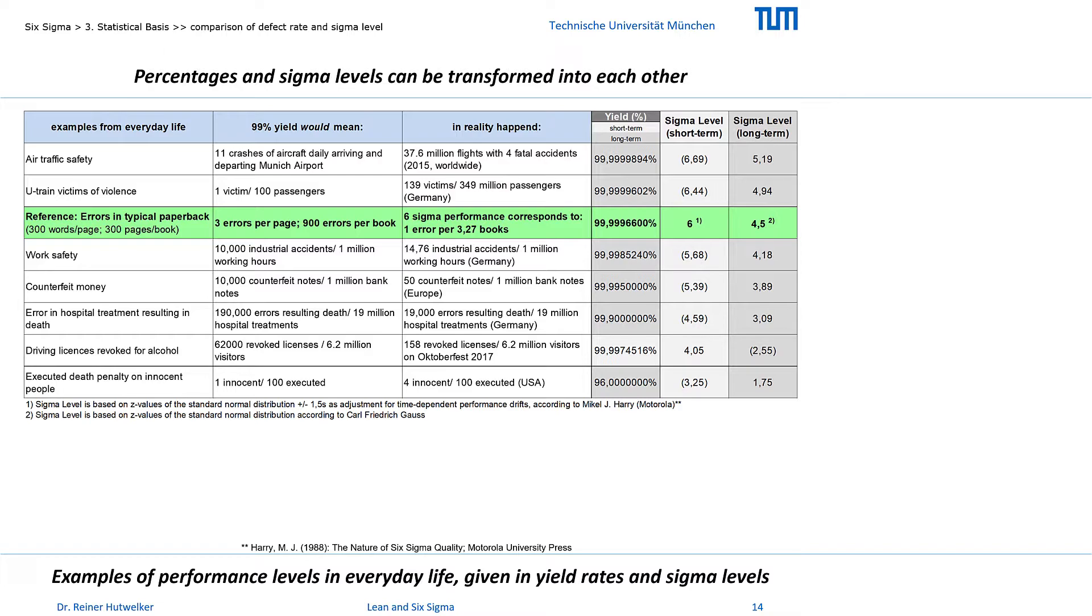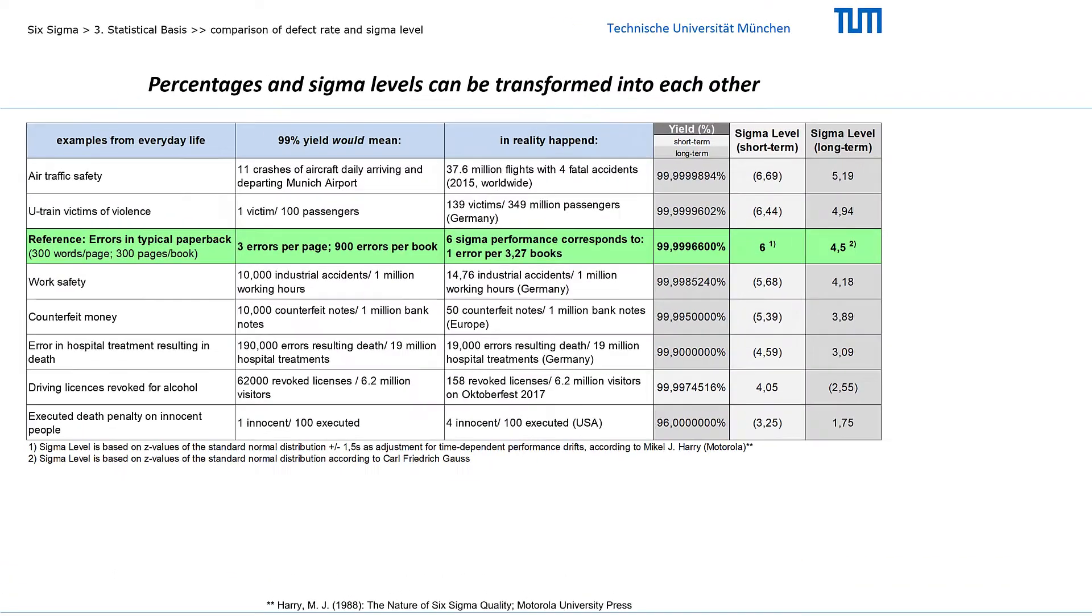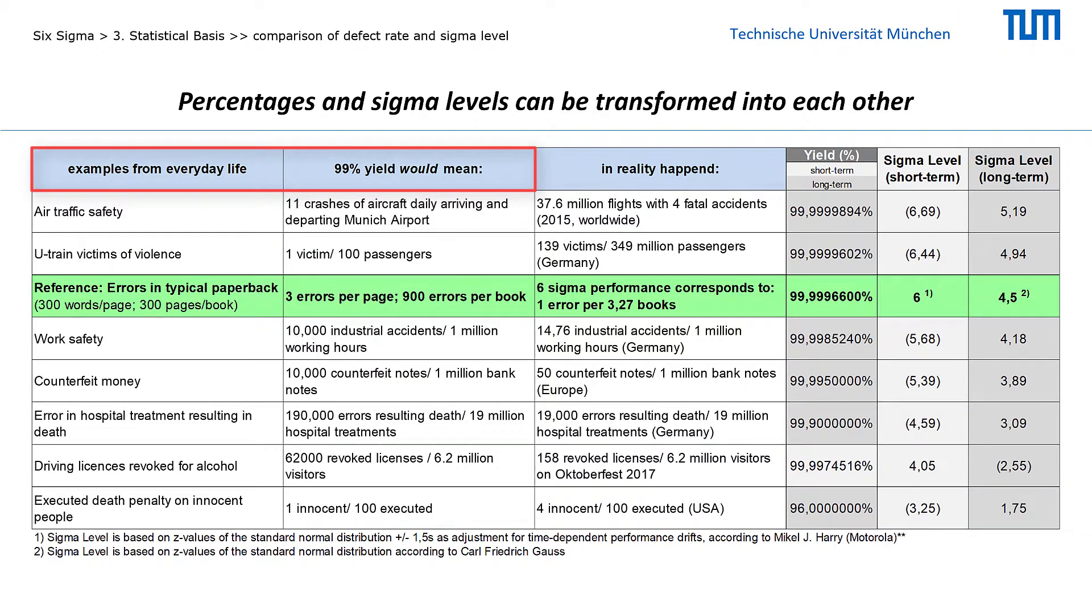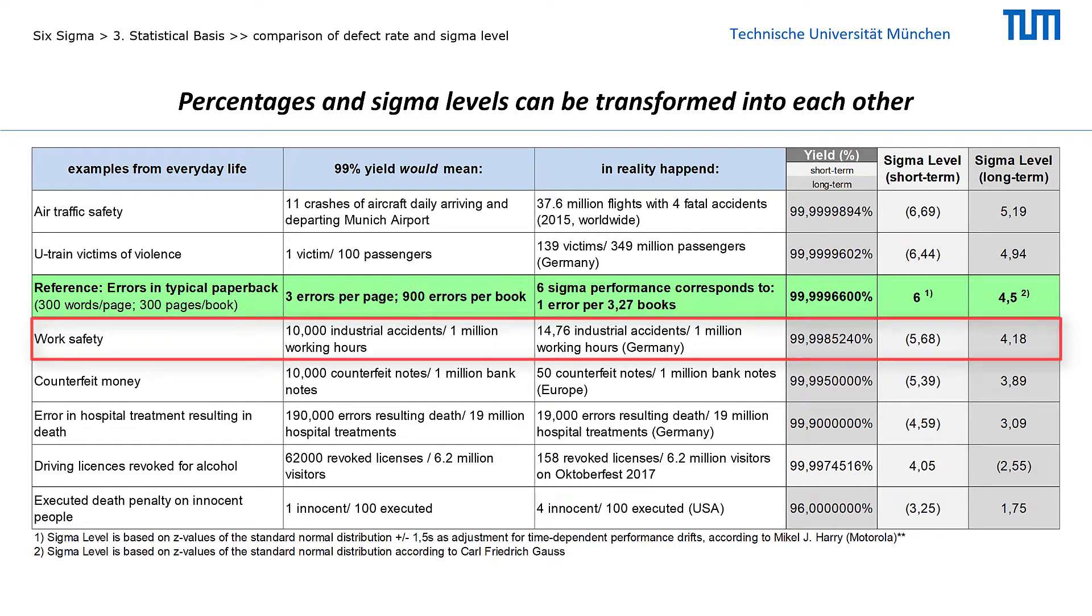Each example shows what a yield of 99% would mean. I also documented from different sources what actually happens in reality. Here you can compare the actual yields in percent and the corresponding sigma values, for long-term and short-term observations respectively. As you can see, a 99% yield in air traffic would probably frighten us so much that no one would fly voluntarily. In fact, however, safety in air traffic is 99.9999894 percent, which corresponds to a long-term sigma level of 5.19. Safety at the workplace and in hospitals is also very high, but already significantly lower.